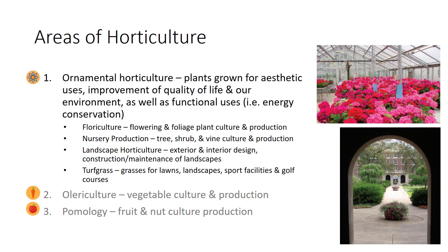Horticulture can be broken down into three major areas—ornamental horticulture, olericulture, and pomology. The first major area is ornamental horticulture, which involves growing and using plants for their natural beauty and can be further broken down into three groups—floriculture, landscape horticulture, and interiorscaping. Floriculture is the production, transportation, and use of flower and foliage plants. In the United States, floriculture accounts for slightly more than half of the non-food horticulture industry.